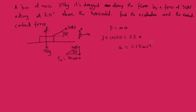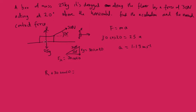Now we also want to find the normal contact force. The normal contact force R is pulling upward, but there's also a component pulling up from the rope. The force from the rope in the vertical direction is 30 sin 20. So the normal contact force R plus 30 sin 20 must equal the gravitational force in the y direction, 25g. Rearranging that, R equals 240 newtons.